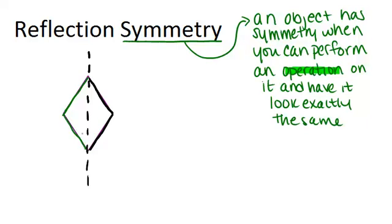It would look exactly the same. So because this line exists and this is called the line of symmetry, this shape has reflection symmetry. So basically a shape has reflection symmetry if there exists a line such that you can flip the shape across the line and have it look exactly the same.